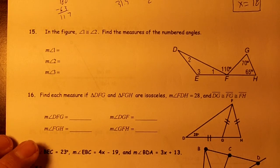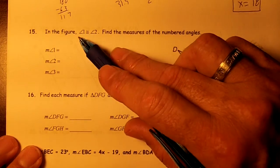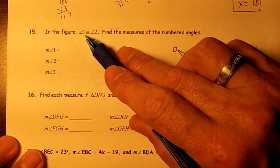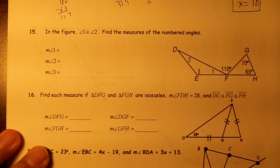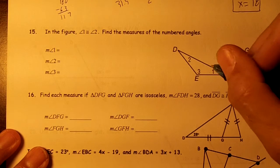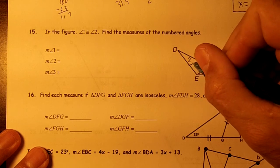Number 15 and 16. First, find the measure. In the figure, angle 1 is congruent to angle 2. Find the measures of the congruent angles. So we know that this angle is the same as this angle.